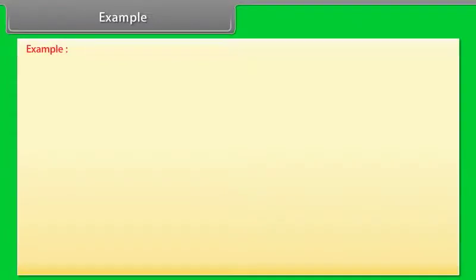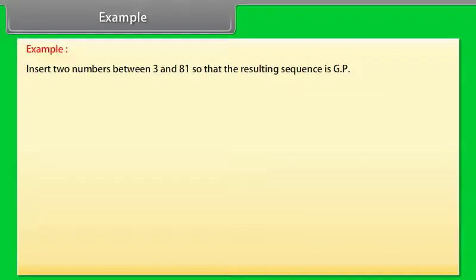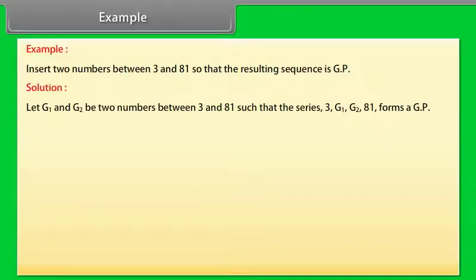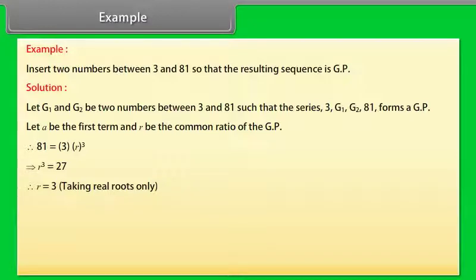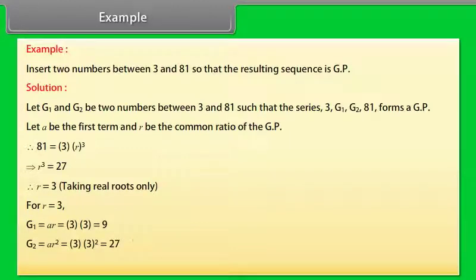Example: Insert two numbers between 3 and 81 so that the resulting sequence is a GP. Let G1 and G2 be the two numbers so that 3, G1, G2, 81 form a GP. Then 81 = 3·R³, giving R³ = 27, so R = 3. Therefore G1 = 3·3 = 9 and G2 = 3·3² = 27. The required two numbers are 9 and 27.